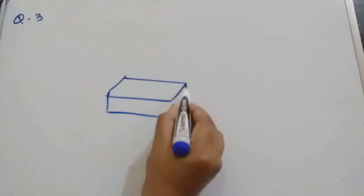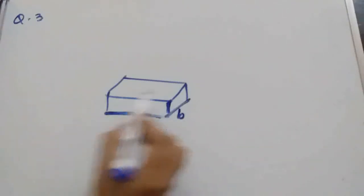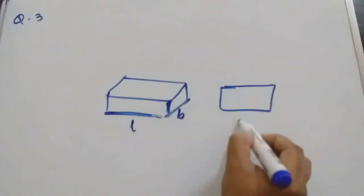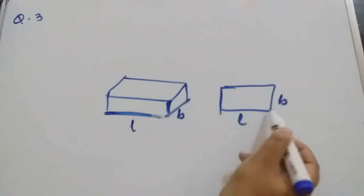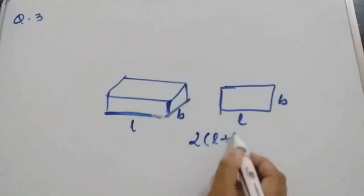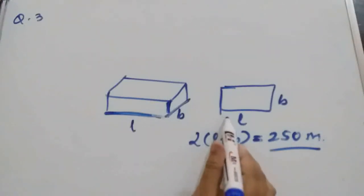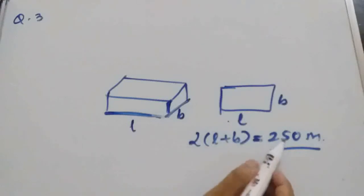Now suppose hall is also cuboidal in shape. So floor of the rectangular perimeter is given. For floor we know length and breadth will come. So it is a rectangle, floor will be a rectangle having dimension L and B. So what will be perimeter of this rectangle? 2 times L plus B which is equal to given 250 meter. This is already given that perimeter of the hall of the room is 250 meter.